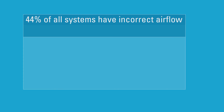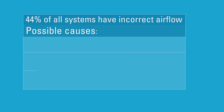Surprisingly, the airflow is incorrect in a lot of homes. One study actually found that 44 percent of all systems evaluated had incorrect airflow. And this might happen for a few reasons, all caused by a difference between the original design and what was actually installed in the home.